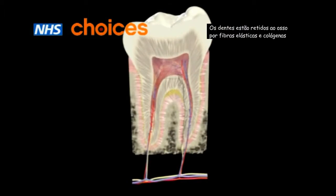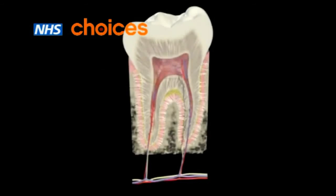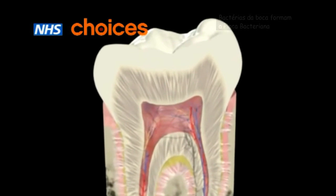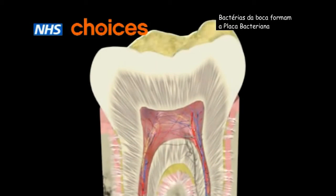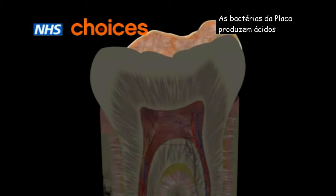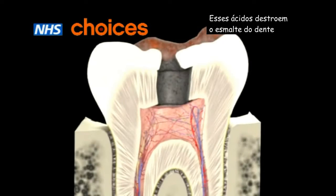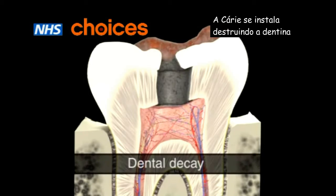Your tooth is attached to the jaw via a strong ligament called the periodontal ligament. Bacteria are found in plaque, which is a by-product of food and saliva. Plaque bacteria produce acid which makes holes in the enamel that eventually reach the centre of the tooth. This is known as dental decay.